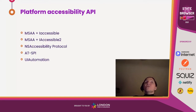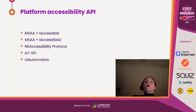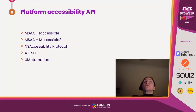The bad news is they are not JavaScript APIs — we can't use them as developers. They are the exclusive domain of assistive technologies that can use them to ask for accessibility information about what's on screen. That might be information in the operating system interface, an application interface, or in the case of a browser, the content that the browser renders inside itself.